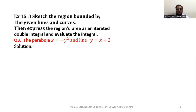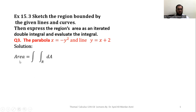In order to sketch the region, the boundaries are the parabola x = -y² and the line y = x + 2. In order to solve this problem and learn this concept, we must know the formula for the area of a given region in the form of double integrals. The formula is: area of a given region equals the double integral over the region R of dA.